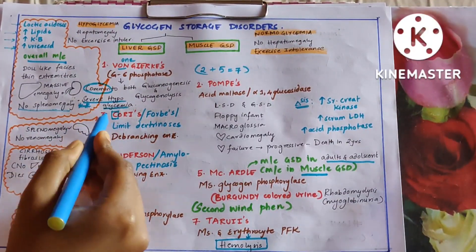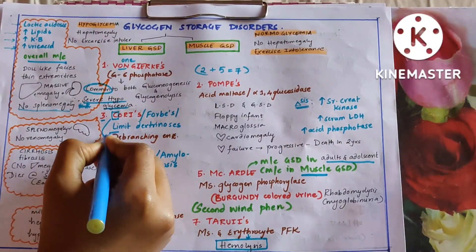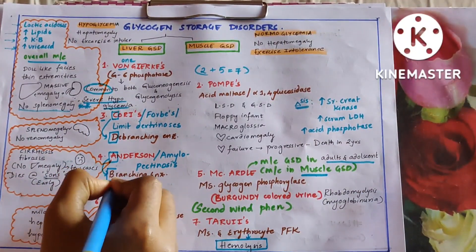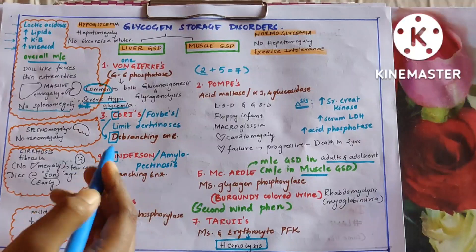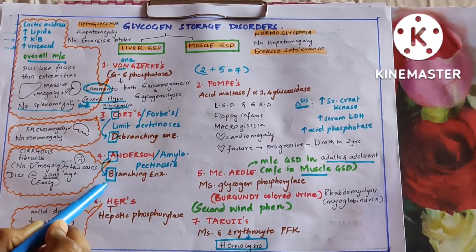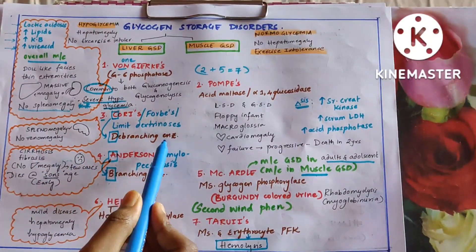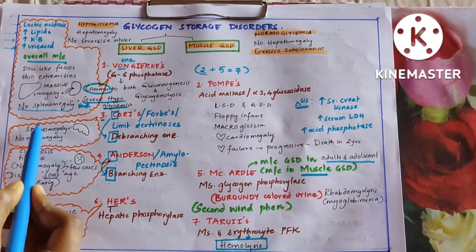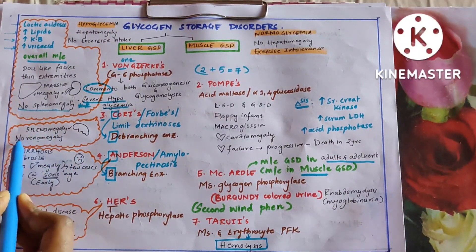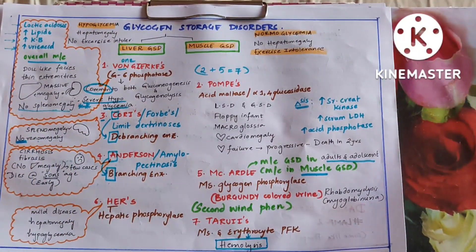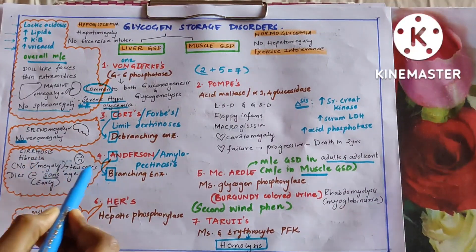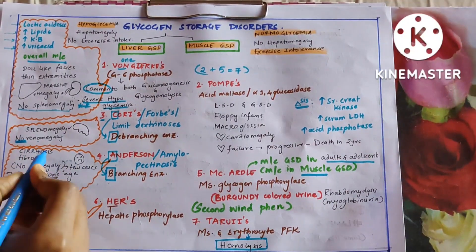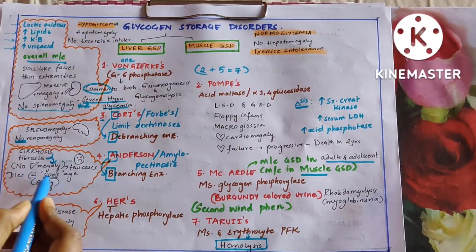Cori's disease is otherwise called Forbes or limit dextrinosis — due to debranching enzyme deficiency. C for Cori, D for debranching; A for Anderson, B for branching enzyme. In clinical features, Cori's has splenomegaly in contrast to Von Gierke's which does not, but in Cori's there is no renomegaly.